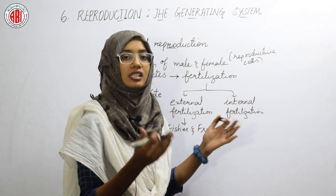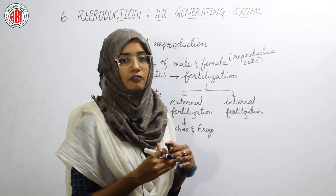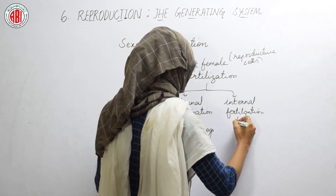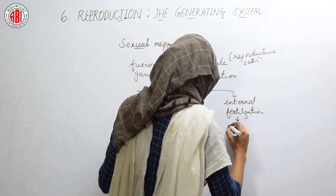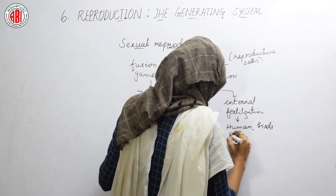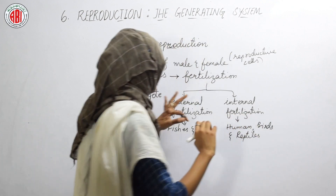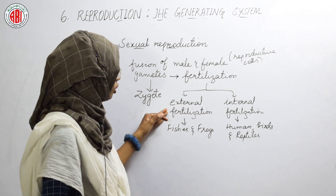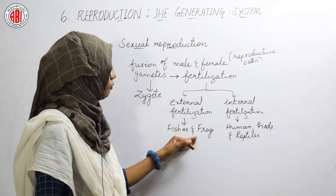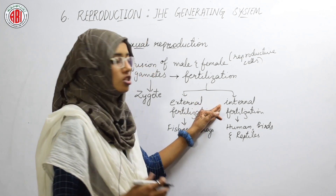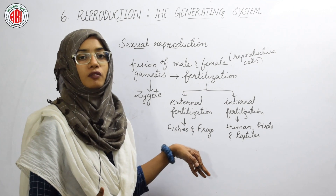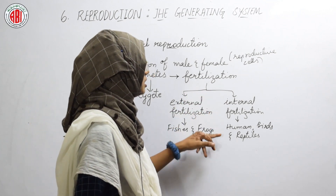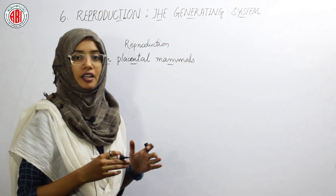Internal fertilization is the fusion of the reproductive cells inside the body of the female living organism. This type of fertilization can be seen in humans, birds, and reptiles. So external fertilization takes place outside the body — examples are fishes and frogs — while internal fertilization occurs inside the body of the female, as seen in humans, birds, and reptiles.